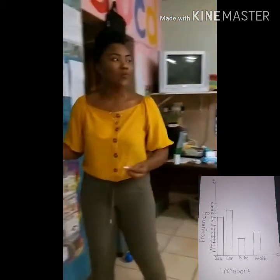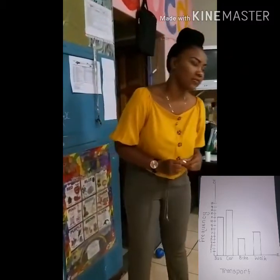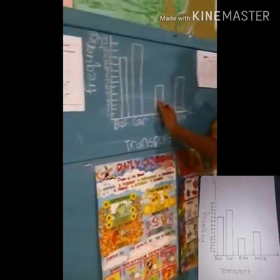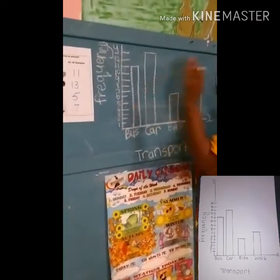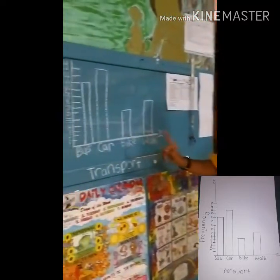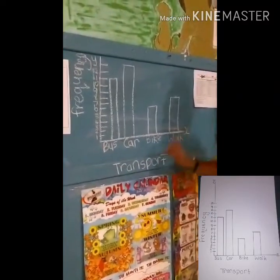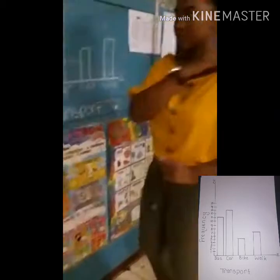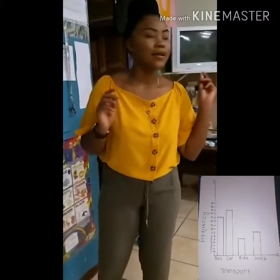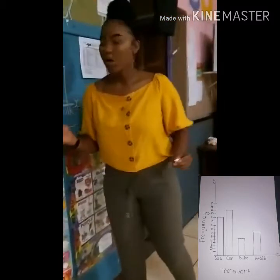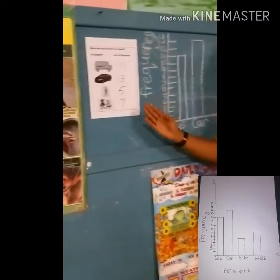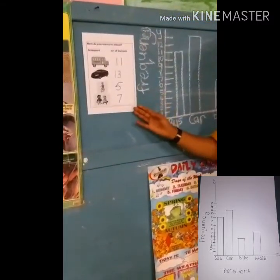Who can tell me why we call this a bar graph? Because it has bars. Each bar represents the amount of children who travel by a specific transport daily. As you can see, we can use a bar graph to represent how you travel to school daily.